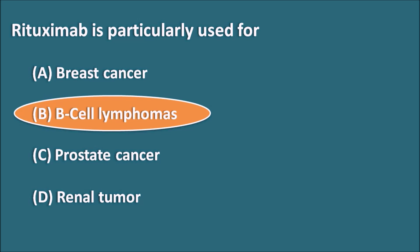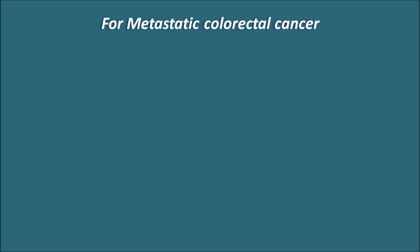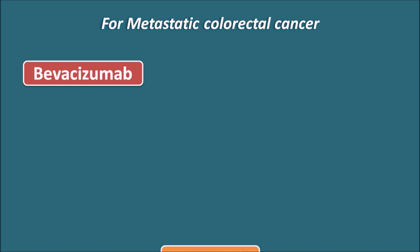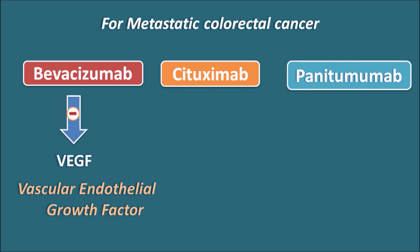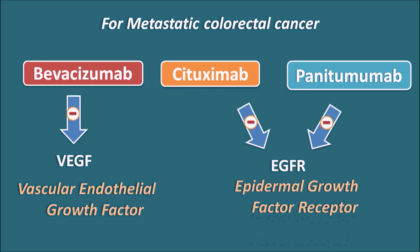Rituximab can be identified by its suffix '-mab', indicating monoclonal antibodies. In cancer chemotherapy, different monoclonal antibodies are used against specific cancers. For metastatic colorectal cancer, bevacizumab (targeting VEGF), cetuximab, and panitumumab (both targeting EGFR, the epidermal growth factor receptor) are used. Monoclonal antibodies antagonize growth factors to control cancerous cell proliferation.